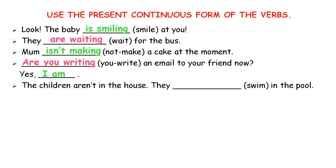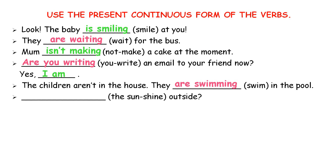The next one: 'The children aren't in the house. They ___ in the pool.' We use 'are + verb-ing' with they — they are swimming in the pool. The next one is a question: '___ outside now?' Our subject is 'the sun,' so it means 'it.' We use 'is + verb-ing.' Is the sun shining outside? No, it isn't.